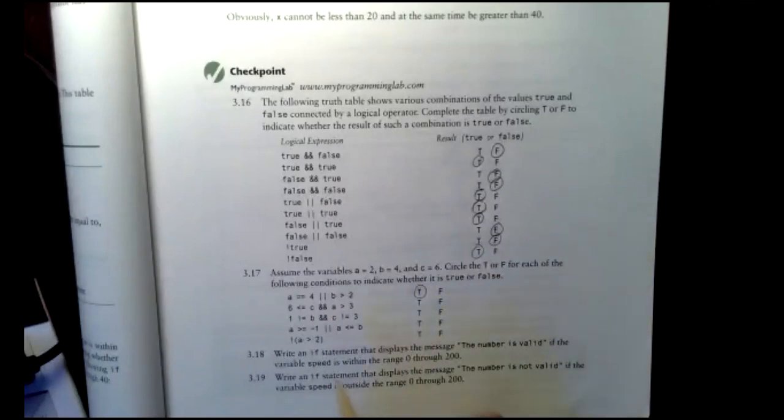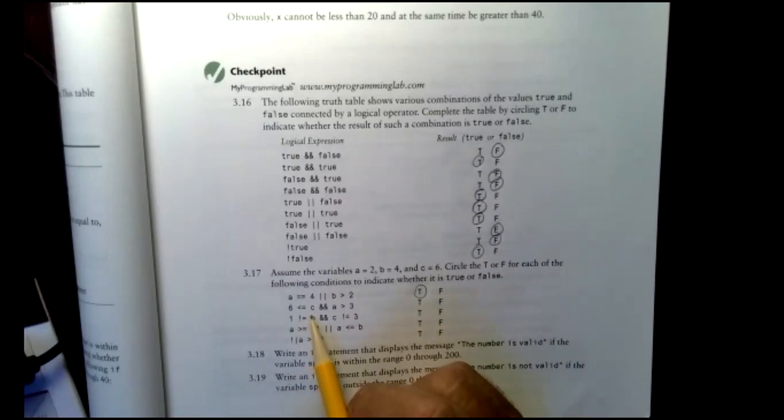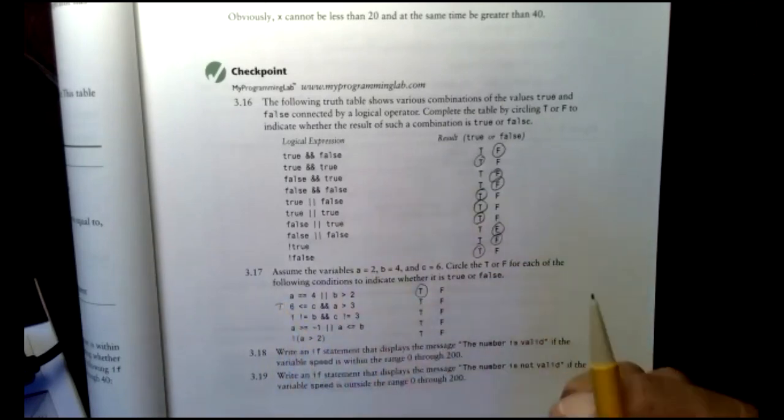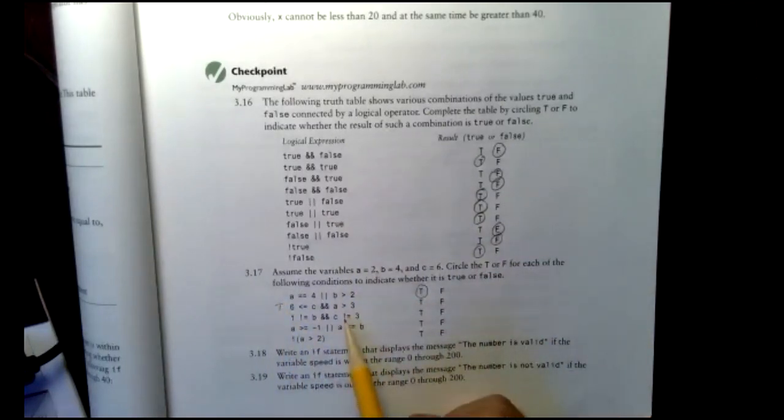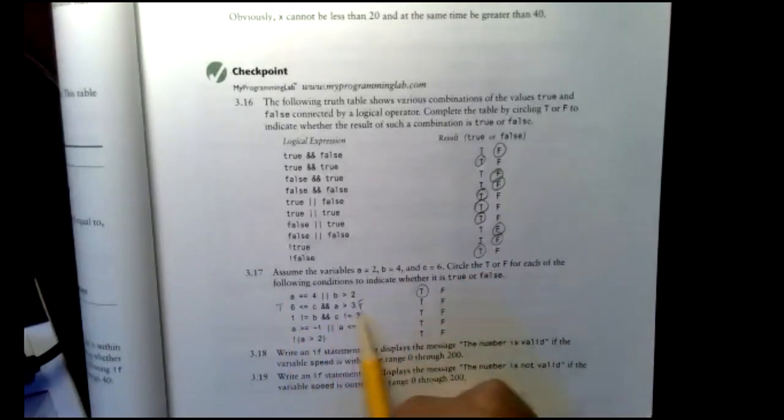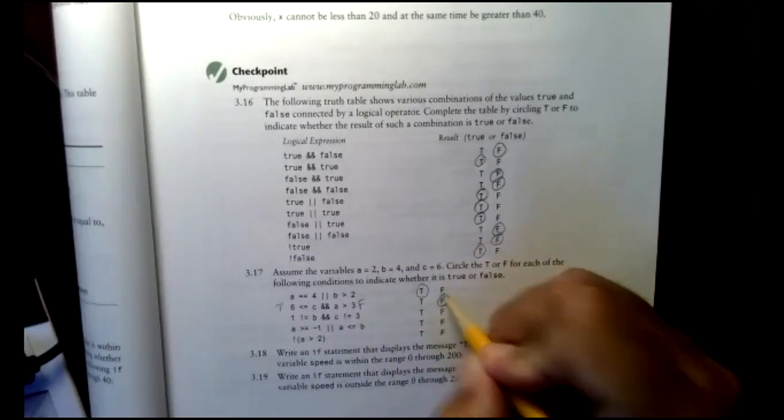All right. The next one. Is 6 less than or equal to C? Well, C is 6, so what's that become? True. True on the left side. All right. Is A greater than 3? A is 2. False. That's false. So true anded with false is, in fact, false.